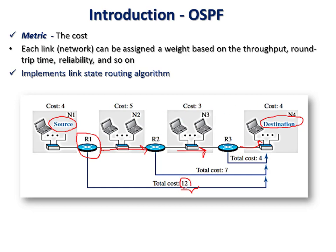When calculating the cost, the source network is not included because it is generating and transmitting the data. The cost at R2 is for networks n3 and n4, that is 3 + 4 = 7, and the cost at router 3 is 4.